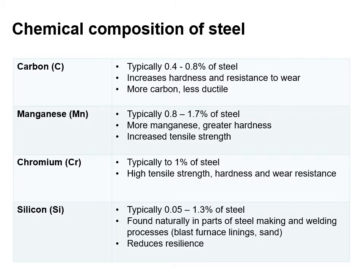Manganese: the greater the manganese content, the greater the hardness and also increased tensile strength. Chromium, typically one percent of the steel, provides high tensile strength, hardness and wear resistance. Silicon is found naturally in parts of the steel-making and welding processes, and it reduces the resilience of the steel.